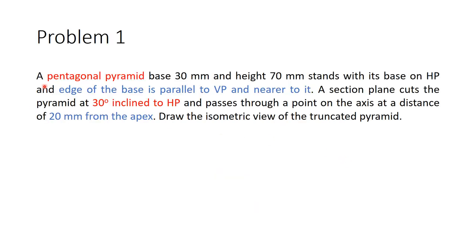The problem: a pentagonal pyramid with base 30 mm and height 70 mm stands with its base on HP, and an edge of the base is parallel to VP and nearer to it. A section plane cuts the pyramid at 30 degrees inclined to HP and passes through a point on the axis at a distance of 20 mm from the apex. Draw the isometric view of the truncated pyramid.